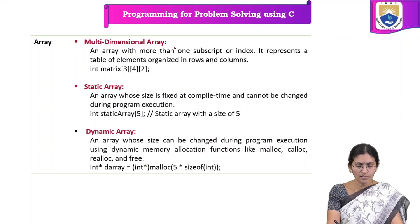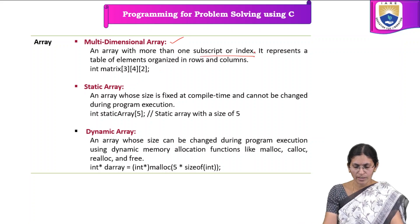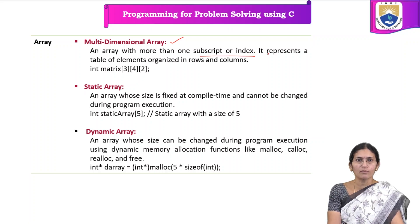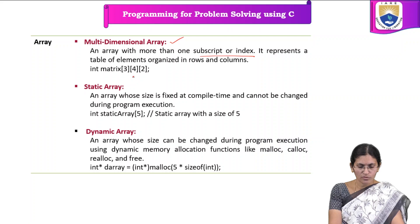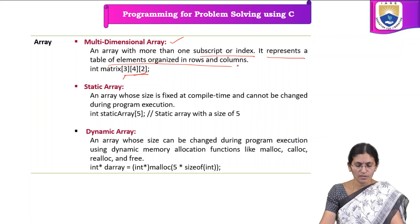Multi-dimensional array — an array with one or more subscripts or indices is called a multi-dimensional array. For example, a 3-dimensional array is an array of 2-dimensional arrays. It represents a table of elements organized in rows and columns.